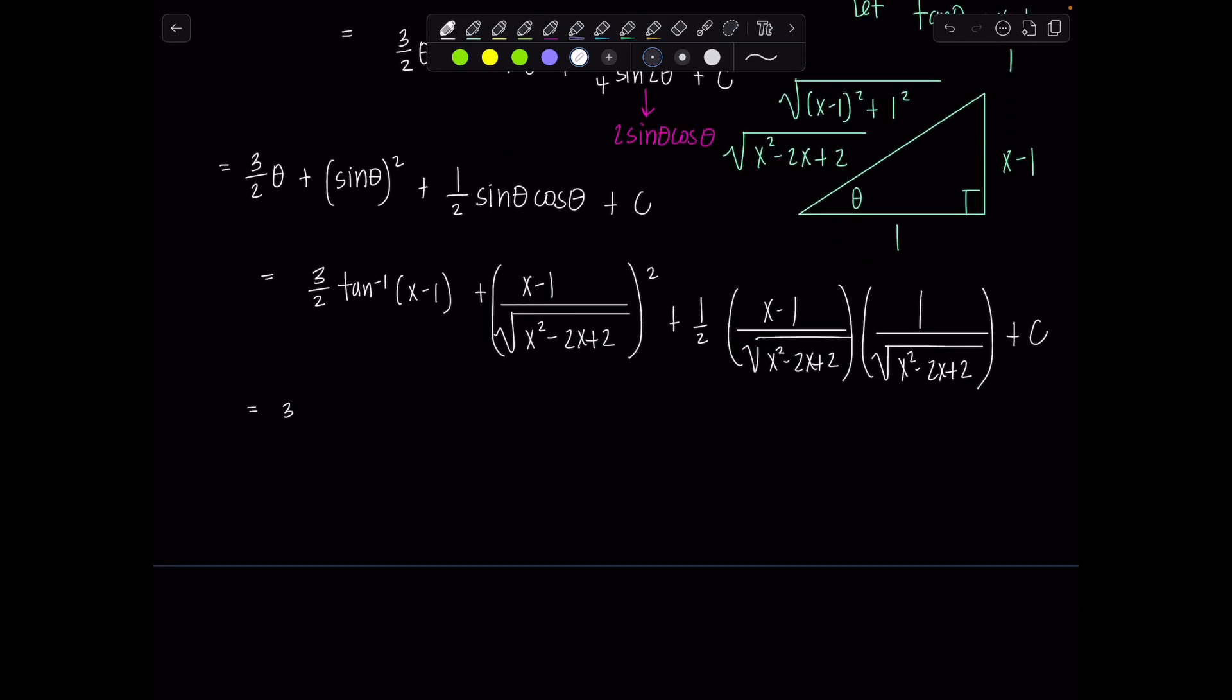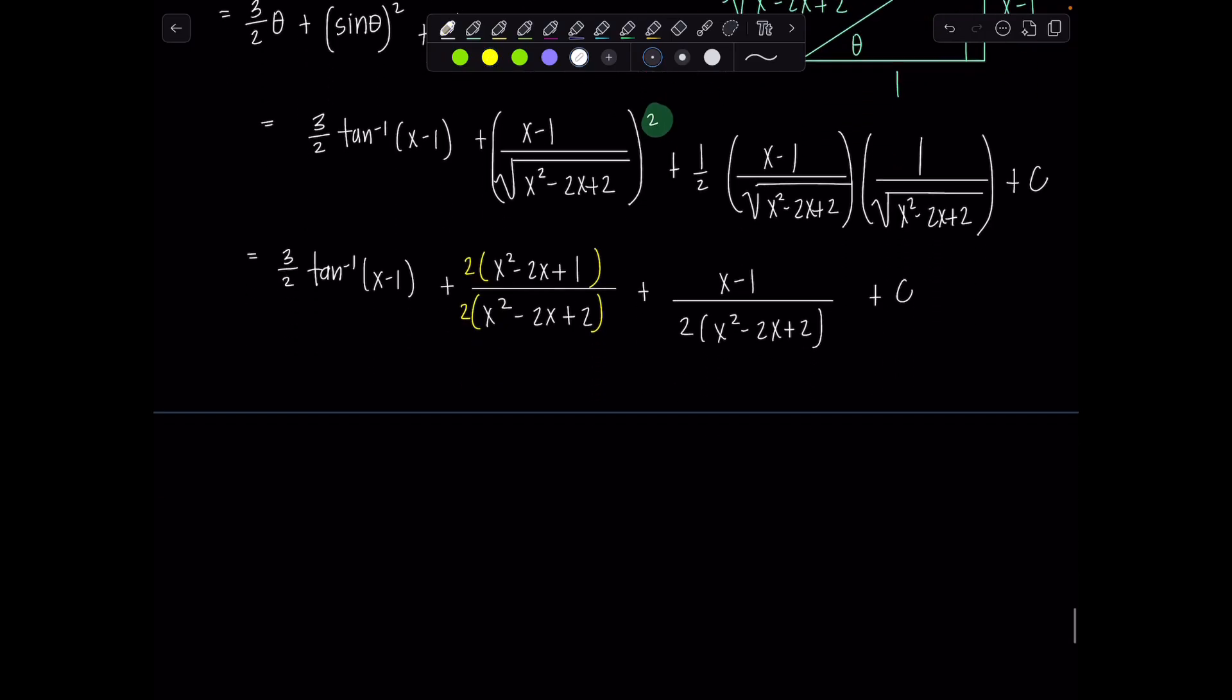What I loved about this problem was there's quite a bit of cleaning up to go from here, and it simplifies so beautifully. So hang tight. So 3 halves, tan inverse, x minus 1 plus, I'm going to distribute this exponent now. So in the numerator, we'll have x squared minus 2x plus 1 over, no more radical, x squared minus 2x plus 2 plus, and then cleaning up here, this will just be x minus 1 over 2 times x squared minus 2x plus 2 plus c. And then notice these denominators are almost the same. I'm just going to multiply by 2 here and 2 up top, and then I can combine those two terms together.